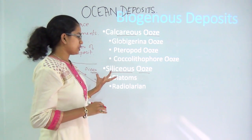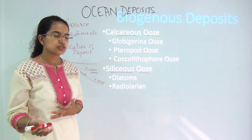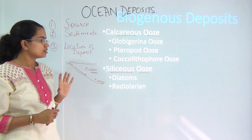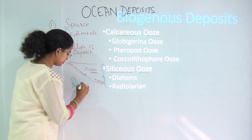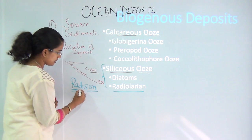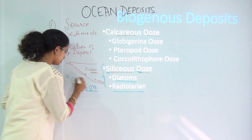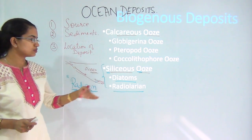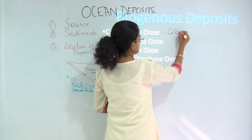There are numerous exam questions asking what kind of ooze a diatom is — whether it is calcareous or siliceous, whether it is biogenous or lithogenous. For such questions, it is important to have a trick to remember. The easiest trick is the mnemonic 'RADIO-SO': RA stands for radiolarians, DI stands for diatoms, and SO stands for siliceous ooze. This mnemonic will help you remember which are included under siliceous ooze — having predominant silica — and which should be included under calcareous ooze — having predominant calcium.